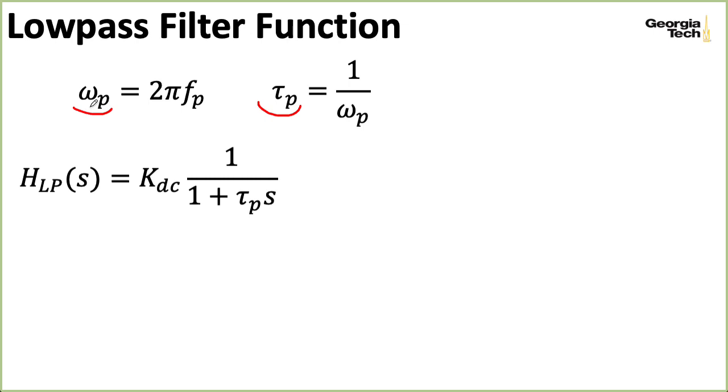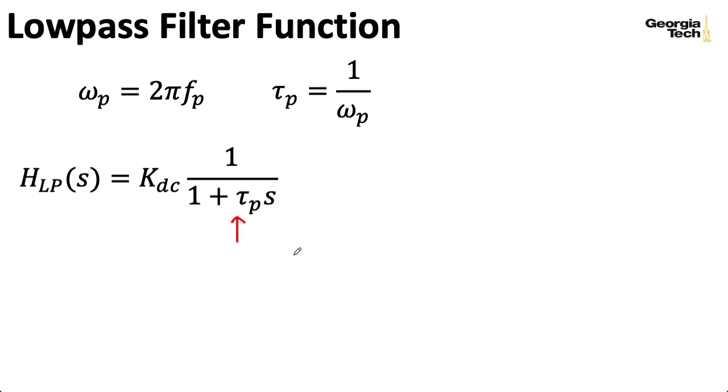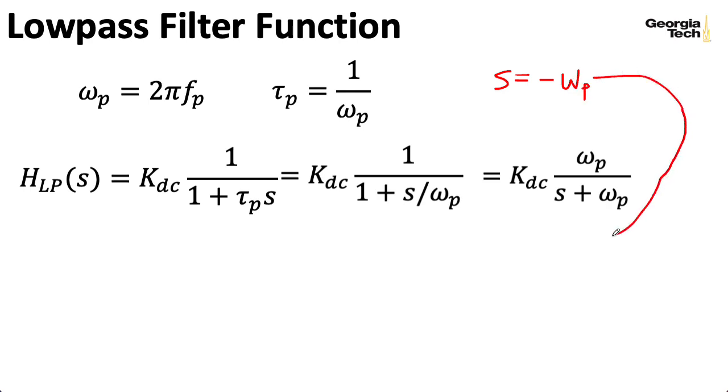In his notes, Marshall Leach usually writes the transfer function like this. And sometimes he'll write it like this by substituting in 1/ω_p for τ_p. I typically like to multiply the numerator and the denominator here by ω_p in order to write ω_p/(s + ω_p). Now, the actual pole location is at s = -ω_p. If you take -ω_p and plug it in for s, then the denominator goes to zero, and the transfer function blows up. And that's the definition of a pole.